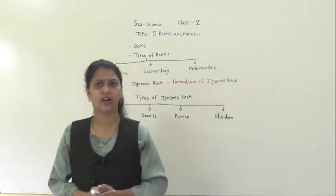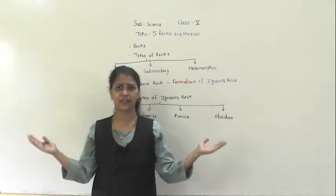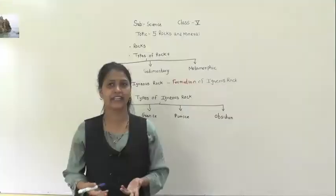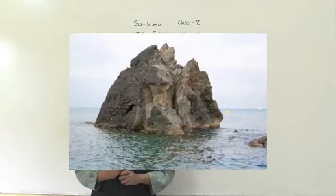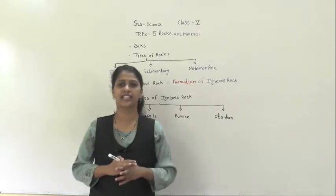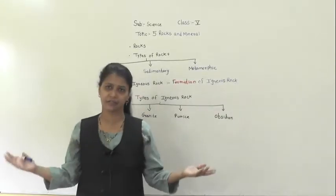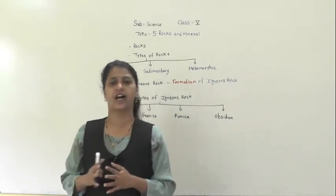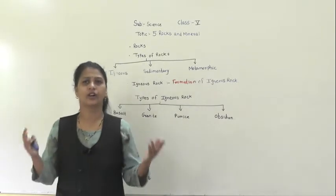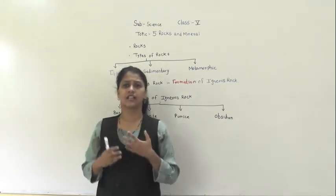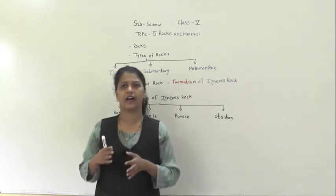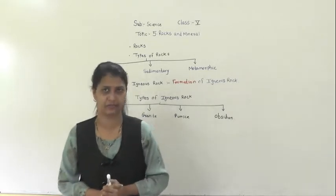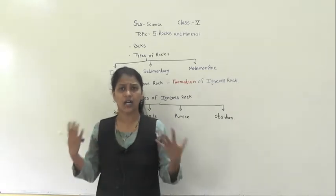Have you seen the rocks? Where do you see the rocks? We see rocks everywhere — on the mountain, on the ground, in the valley, and also under the sea. Our Earth is made up of soil and rocks. Rocks have minerals; some rocks have one mineral and some rocks have many minerals within them.